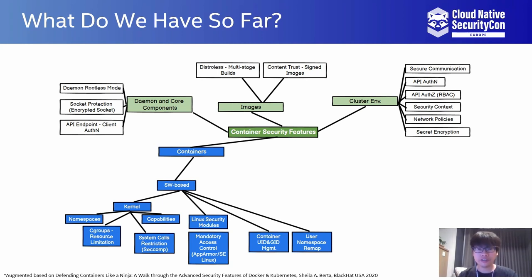Let's revisit the software-based security features of containers themselves. For example, we have cgroups and namespaces in kernel space, which are the foundations of containers. In addition, mandatory access controls, MAC, can be enabled via Linux security modules, LSM. We also have UID and GID management, user namespace remapping, and so on, all of which help build a more security-hardened container.